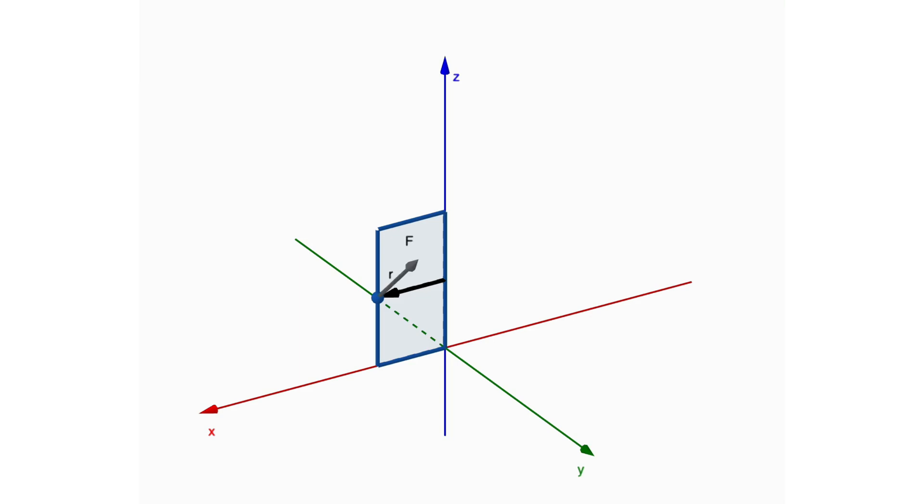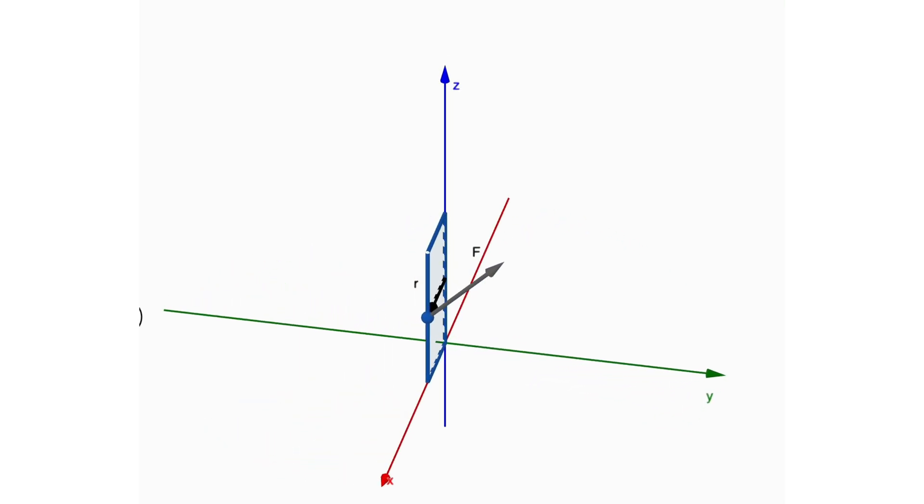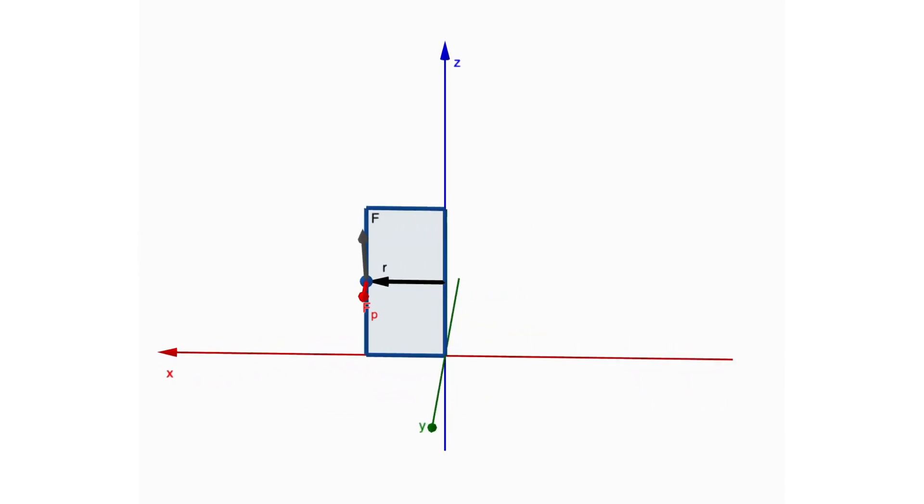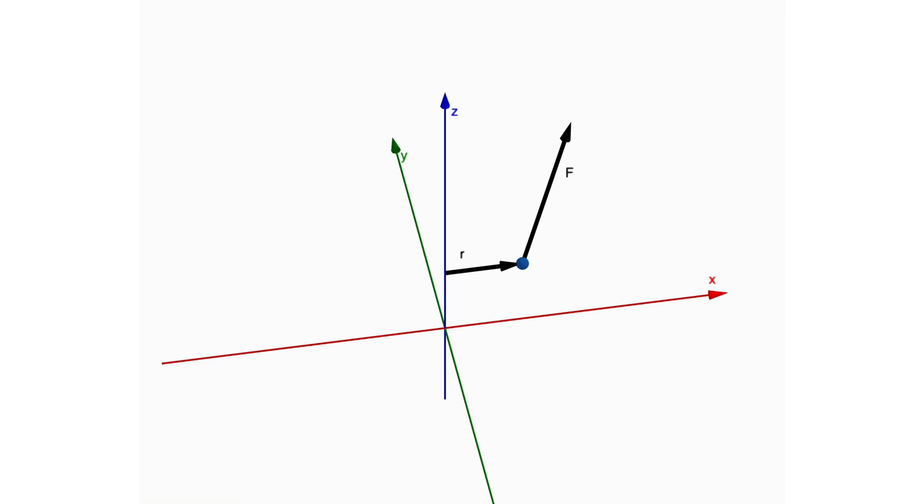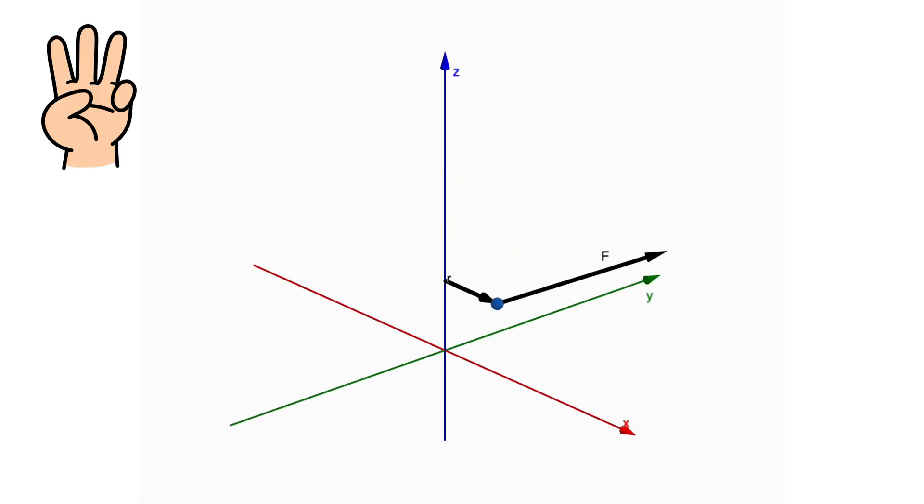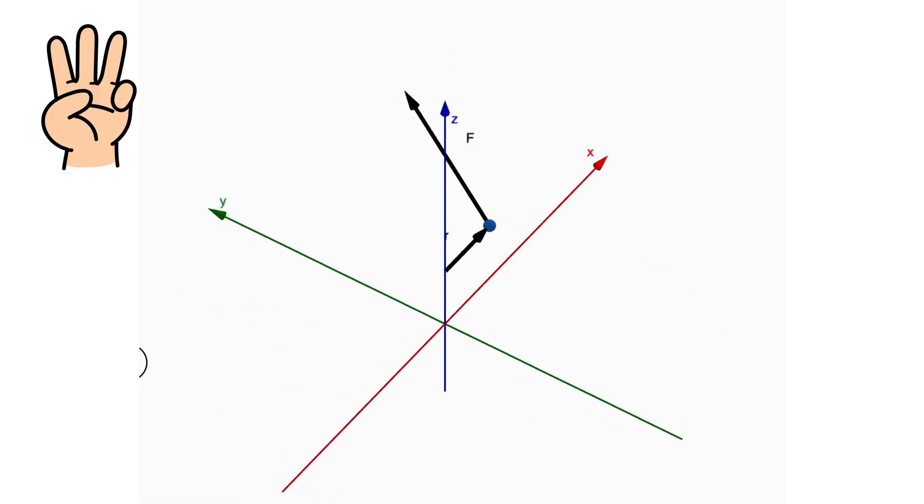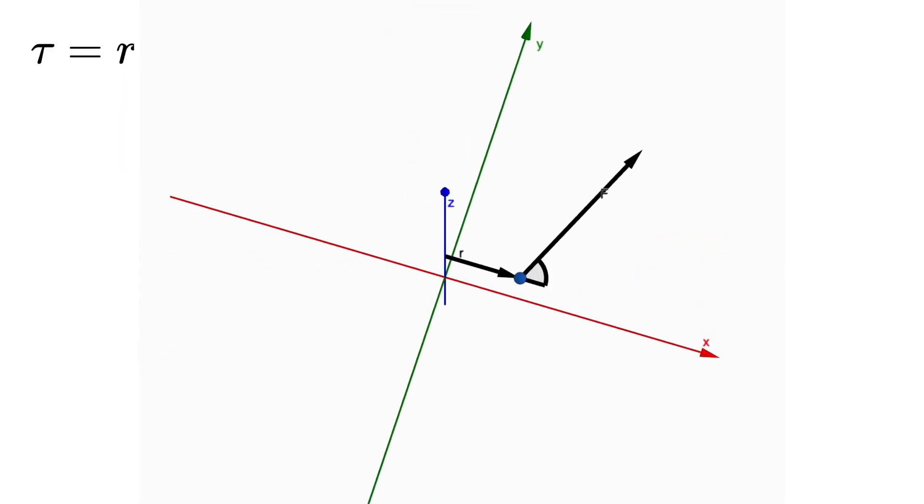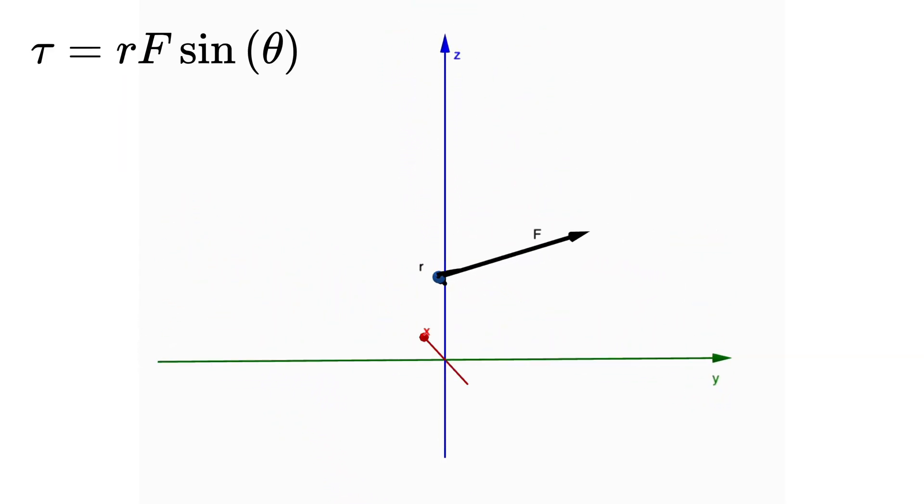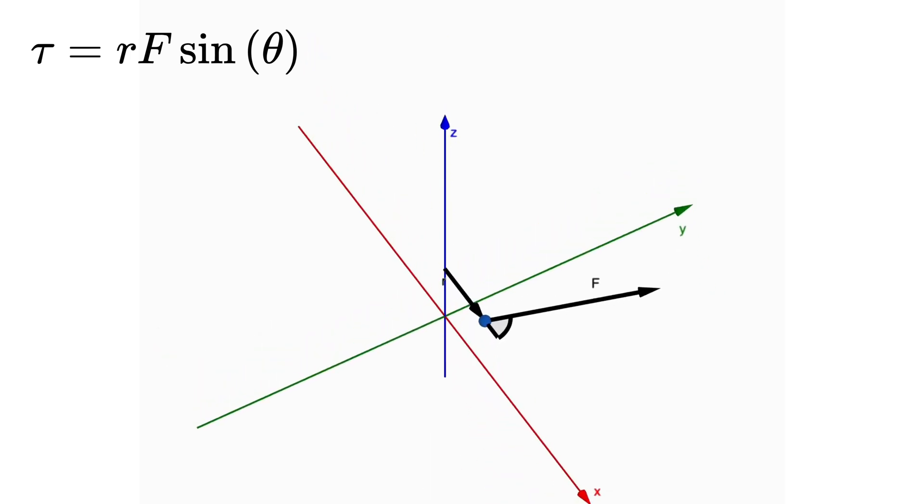The force is usually applied at an angle, not always straight out, so we only consider the part of the force that is effective in making the object rotate. This is why the angle between the position vector and the force also matters. In physics, we say torque is equal to the product of three things. The distance from the pivot, the force applied, and the sine of the angle between them. That means torque is equal to R multiplied by F multiplied by sine theta.